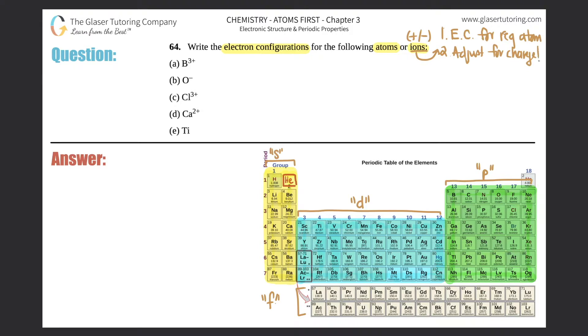First pretend that the charge doesn't even exist, and then once you have the electron configuration, you just manipulate it. It's a quick manipulation, so let's get down to it.